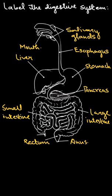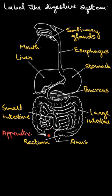A small structure is present at the end of the large intestine which is known as the appendix, and its function is not known yet. So this is the labeling of our digestive system. I hope you have understood. Thank you.